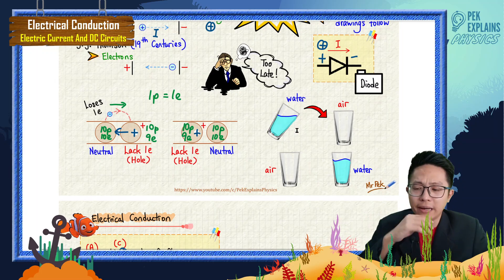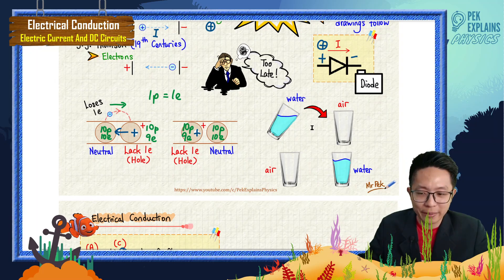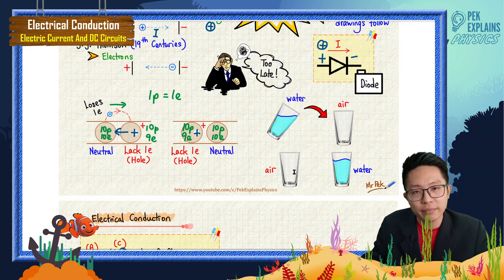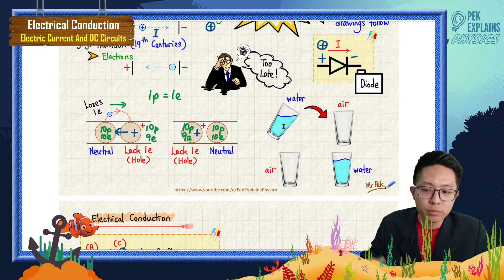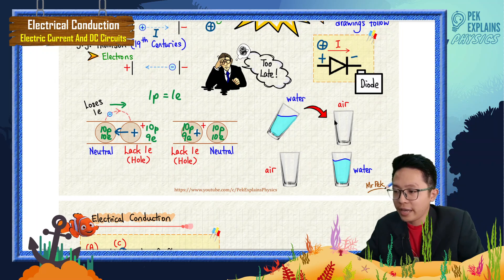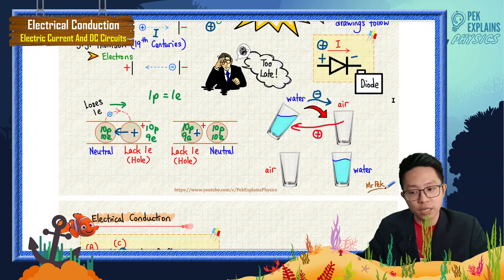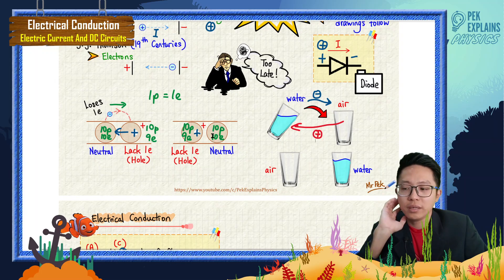Here is an analogy: I have two cups, but only one has water; the other has air — just like a hole. When I pour water from the first cup into the second, the second becomes filled with water, but the first gains a hole. The water moved to the right, but the air moved to the left — opposite directions. Water is like the electron; the air moving in the opposite direction is like the positive charge or conventional current.